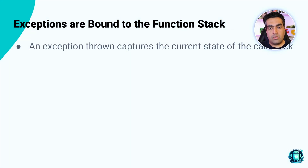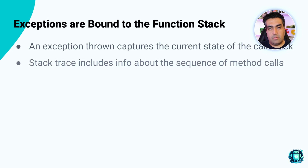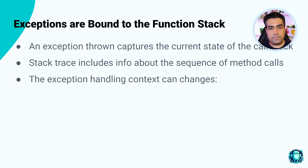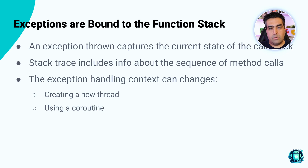One point that might be ignored by junior developers is that when an exception is thrown in Kotlin or any JVM language, the JVM captures the current state of the call stack. This stack trace includes information about the sequence of method calls that led to the exception. If you start a new stack — for example, by creating a new thread or using a coroutine — the exception handling context changes. Each thread or coroutine has its own call stack. If an exception is thrown within a new stack, it will only propagate within that stack.